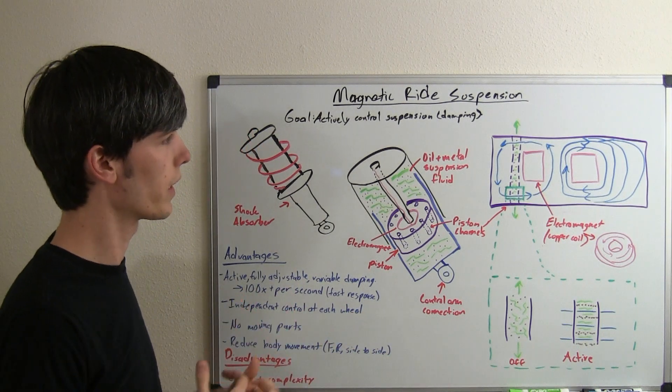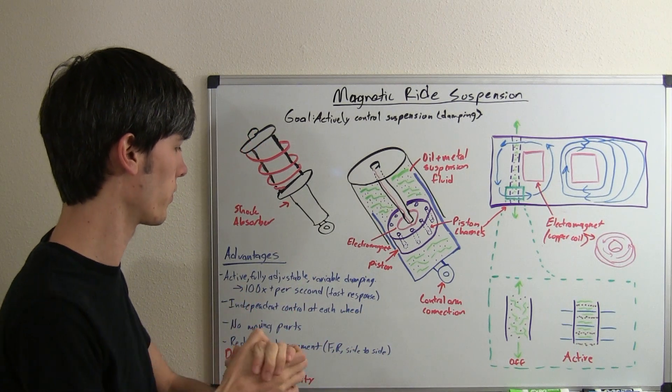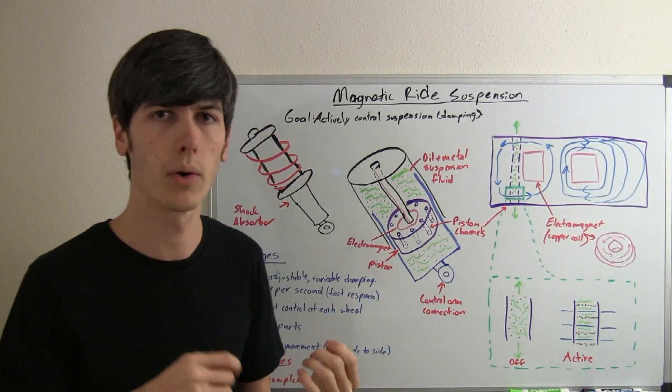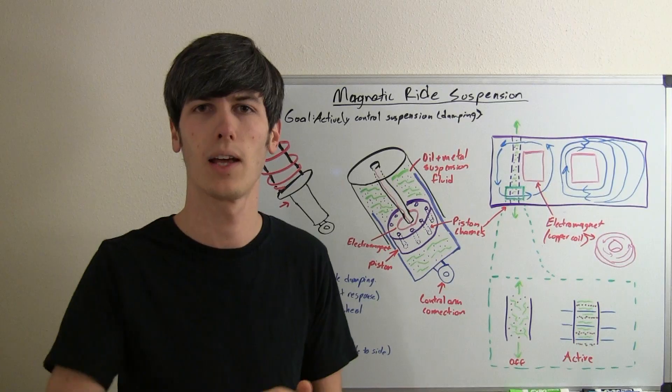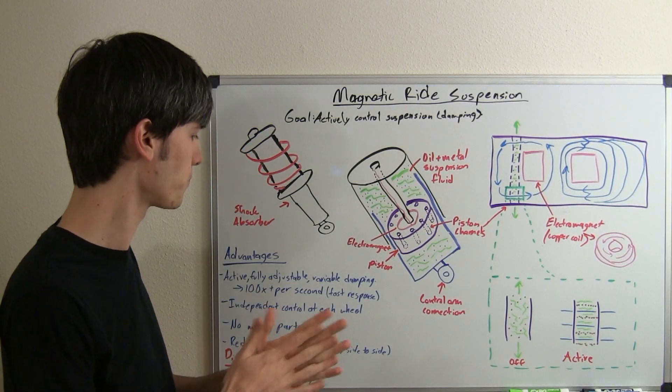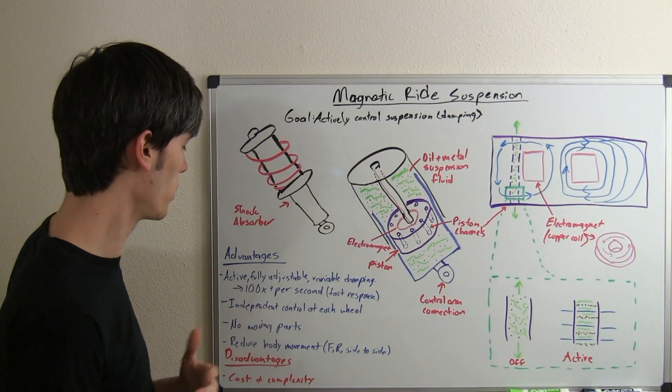And it's very quick to react to these things versus some of the other variable options out there. The other thing is most suspensions out there aren't even variable or they are variable but you have to manually adjust them. You know, go out with a wrench, turn a little knob and then you can change the damping ratio. So, that's one huge advantage.